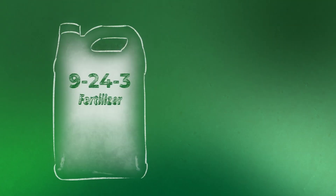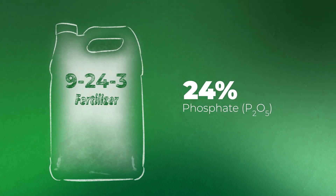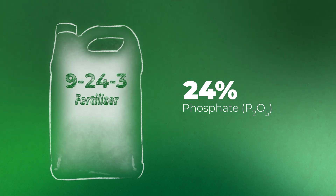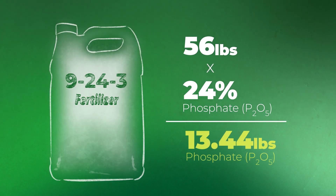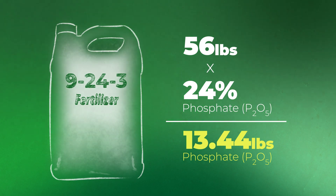Now for phosphorus — we're going to go through the same process. In this particular blend, we have 24% phosphorus. We come back to our total pounds of 56, and multiply that by 24%. That gets us right at a little over 13 pounds of P2O5 for this application. So in those 5 gallons, we're going to get about 13 pounds of phosphorus to go with that original 5 pounds of nitrogen.